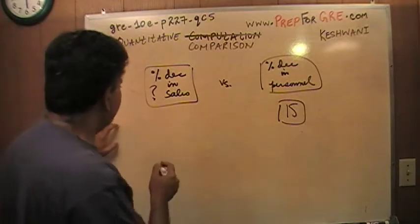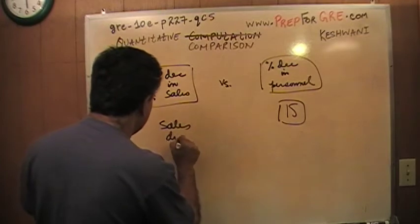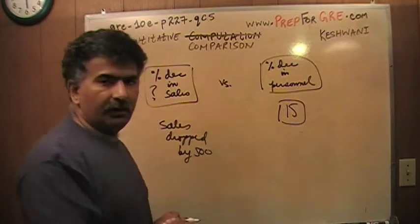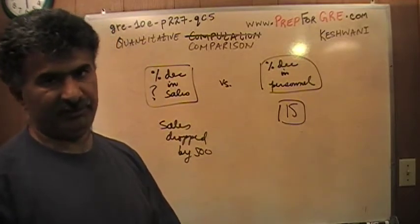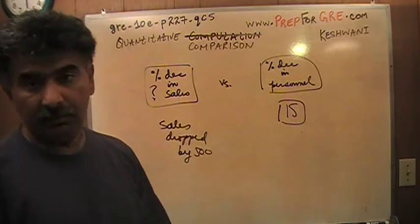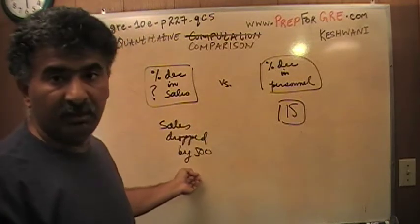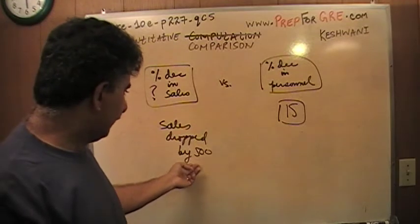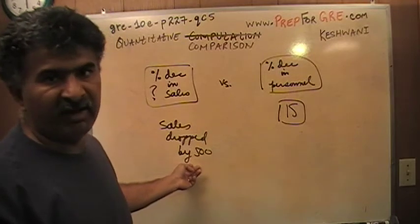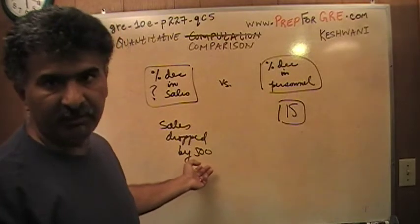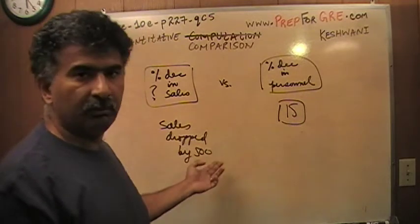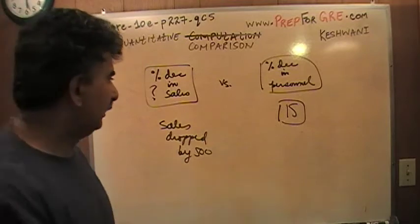All we know is that the sales dropped by 500. If the original sales were 1000 and it drops by 500, that's a drop of 50%, in which case column A would be bigger. But if the original sales were 5000 and it drops by 500, if the original sales were 5 million and it drops by 500, that's a pretty minuscule drop in terms of percentage. So we do not know what's going on here. We cannot tell which quantity is bigger. The answer is D.